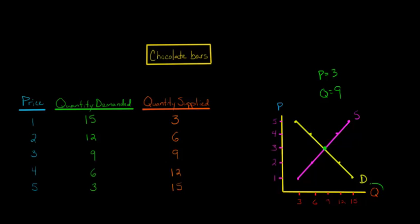So our equilibrium quantity is 9, and our equilibrium price is $3.